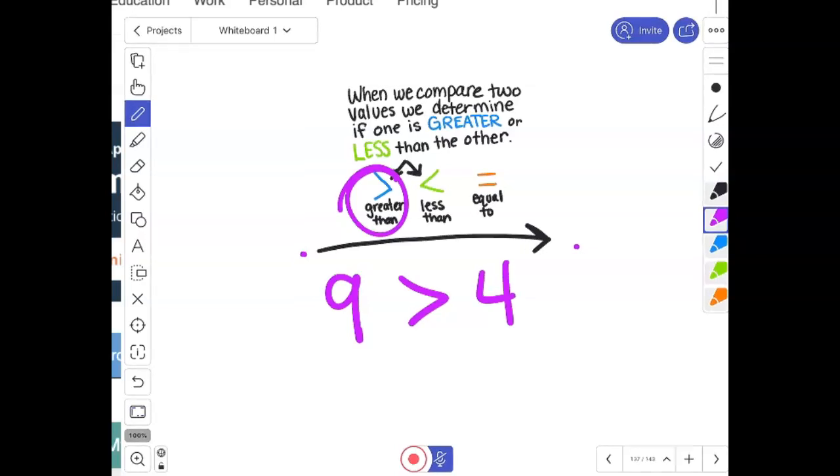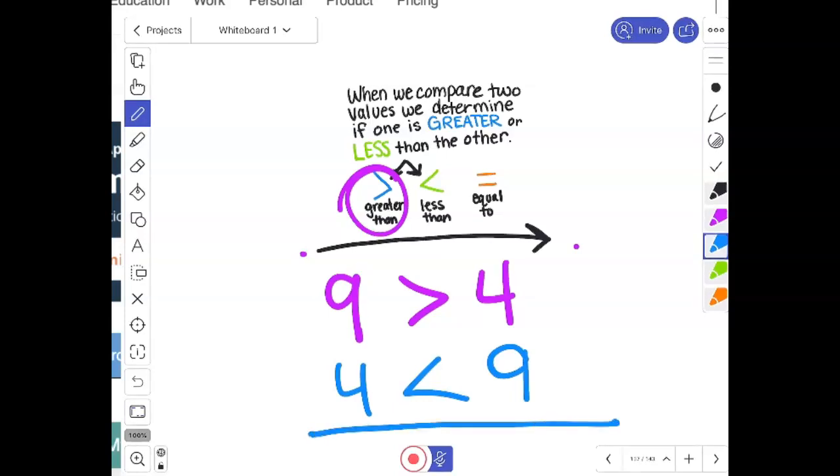And you would probably all get that one right. Except if I rewrote that exact same inequality, like this, if you read that as nine is greater than four, it would be wrong because that's not what that says. This says, because you have to read from left to right, four is less than nine. Ultimately, mathematically, those mean the same thing. But you have to be able to read it both ways, and you have to be able to understand it both ways.